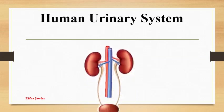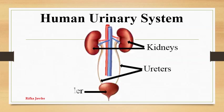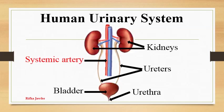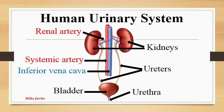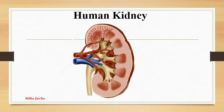Human urinary system. The main parts of the human urinary system are a pair of kidneys, pair of ureters, urinary bladder and urethra. The systemic artery supplies blood to the system and the renal artery supplies blood to the kidneys. The inferior vena cava removes blood from the system and renal veins remove blood from the kidneys. The kidney is the main organ carrying out nitrogenous excretion.